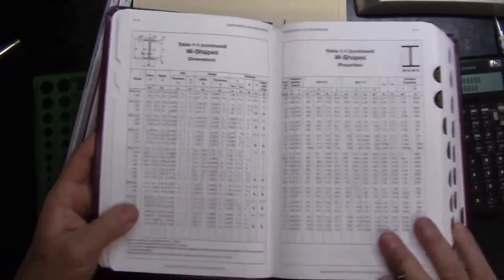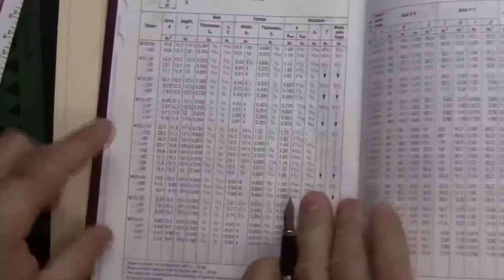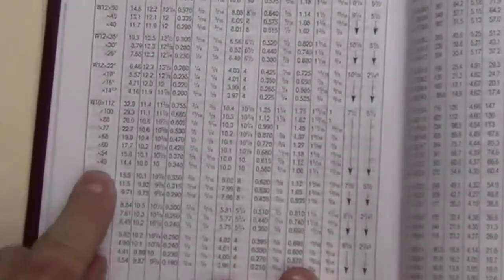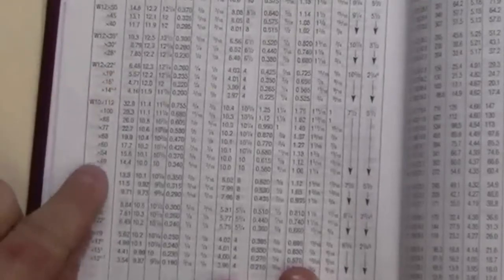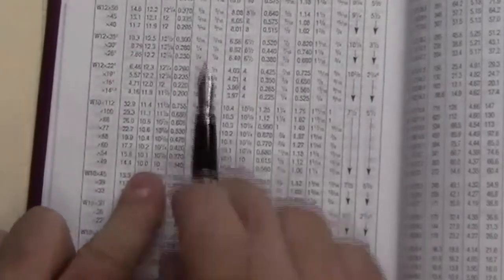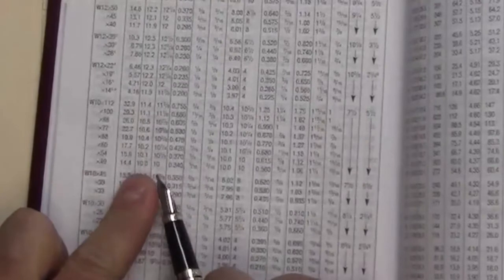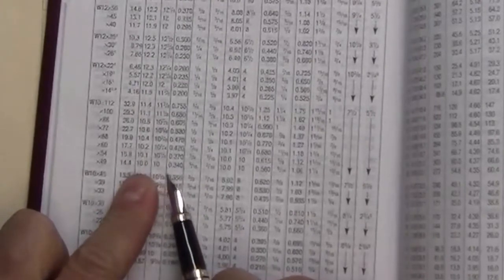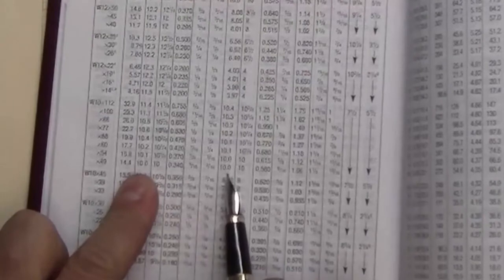And what I want to show in here is looking at the W10 column sizes, we see that they are grouped. And the lightest W10 in this grouping is W10 by 49. And that has to do with the member depth is 10 inches, but also the width if I come over to BF is 10 inches.